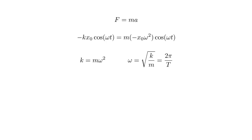Solving for the frequency ω, we get ω equals square root of k/m. But ω is also 2π over the oscillation period T. So we can write T as 2π square root of m/k.